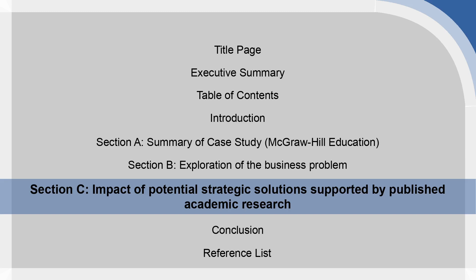There should be a clear connection between Sections A, B, and C. In Section A, you're laying out the business case and placing your report in its broader context. In Section B, you're using tools like SWOT, PESTEL, and Porter's Five Forces to identify a particular business problem facing McGraw-Hill Education. Then in Section C, you're looking at potential strategic solutions to the issue you've explored previously.